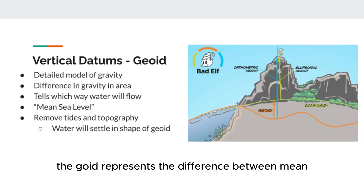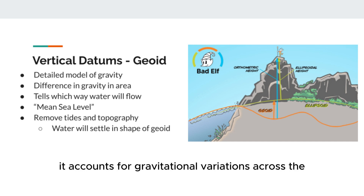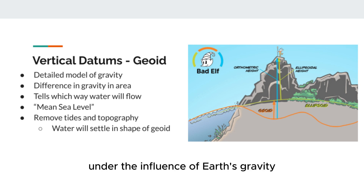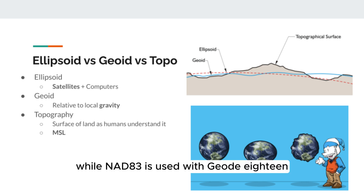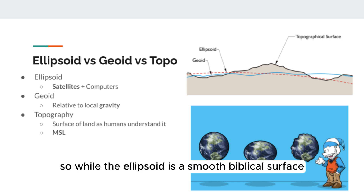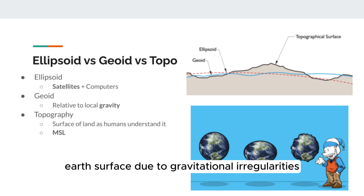Next, we have the geoid. The geoid represents the difference between mean sea level and the ellipsoid. It accounts for gravitational variations across the Earth's surface. Think of it as the shape the ocean would take under the influence of Earth's gravity without winds and tides. WGS84 is often used with the EGM-96 geoid model, while NAD83 is used with Geoid18. So while the ellipsoid is a smooth mathematical surface, the geoid is a more accurate representation of the Earth's surface due to gravitational irregularities.